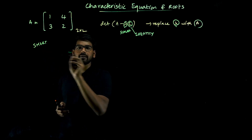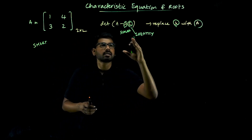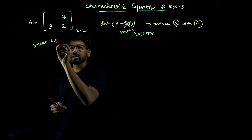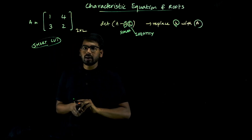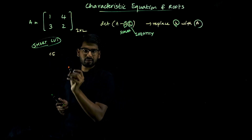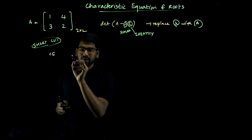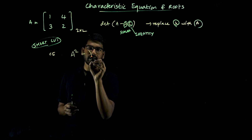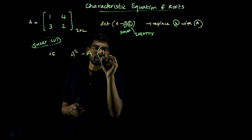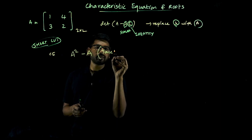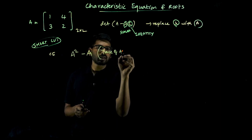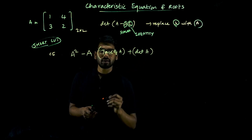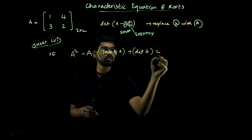We will solve all the questions using the shortcut, and finally at the last I will show you how to do this using the official method. The characteristic equation is given as: lambda squared minus lambda times trace of A plus determinant of A, is equal to zero.